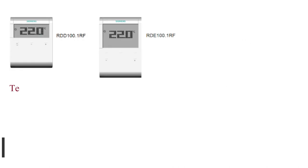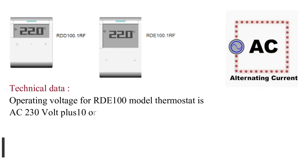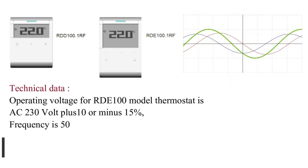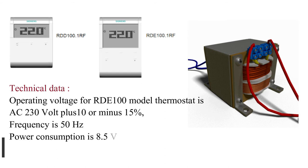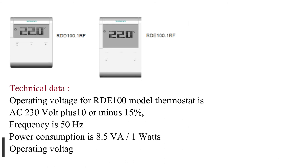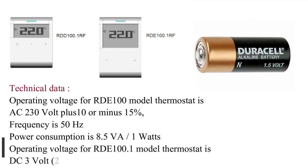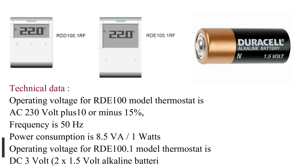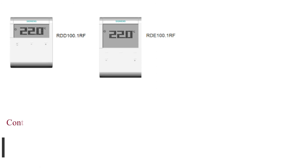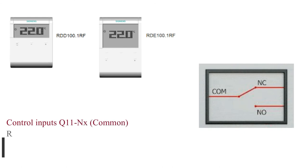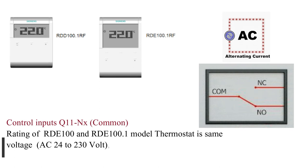Technical data: Operating voltage for RDE100 model thermostat is AC 230V +10% or -15%, frequency is 50Hz. Power consumption is 8.5VA, 1W. Operating voltage for RDE100.1 model thermostat is DC 3V, 2x1.5V alkaline batteries AAA. Control inputs Q11NX common rating of RDE100 and RDE100.1 model thermostat is same voltage AC 24 to 230V and amps is maximum 5 or 2 amps, minimum 8 milliamps.